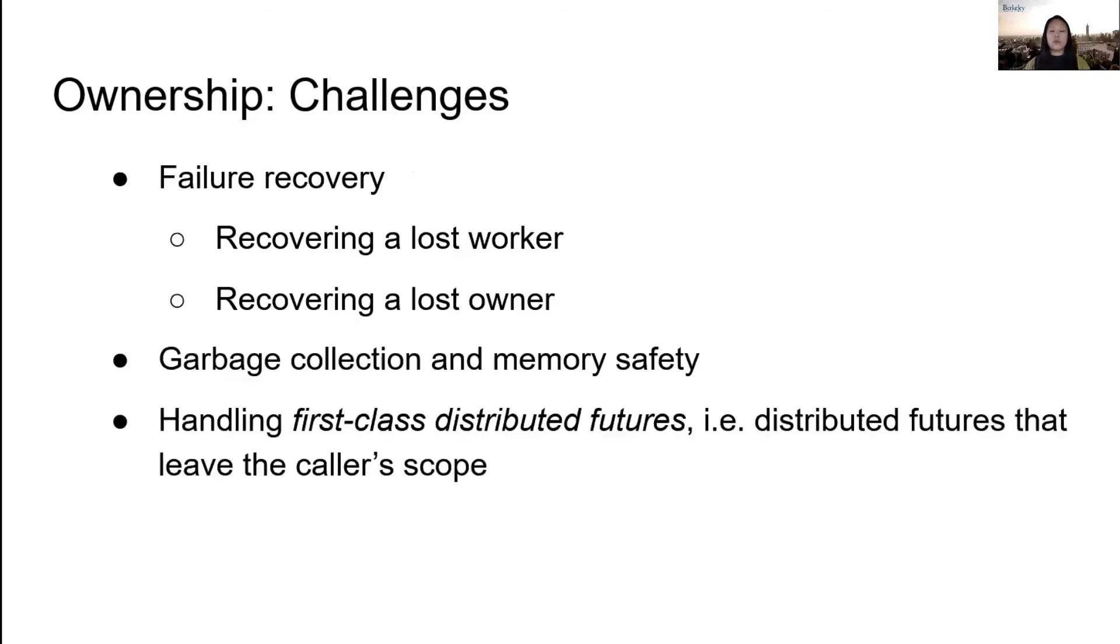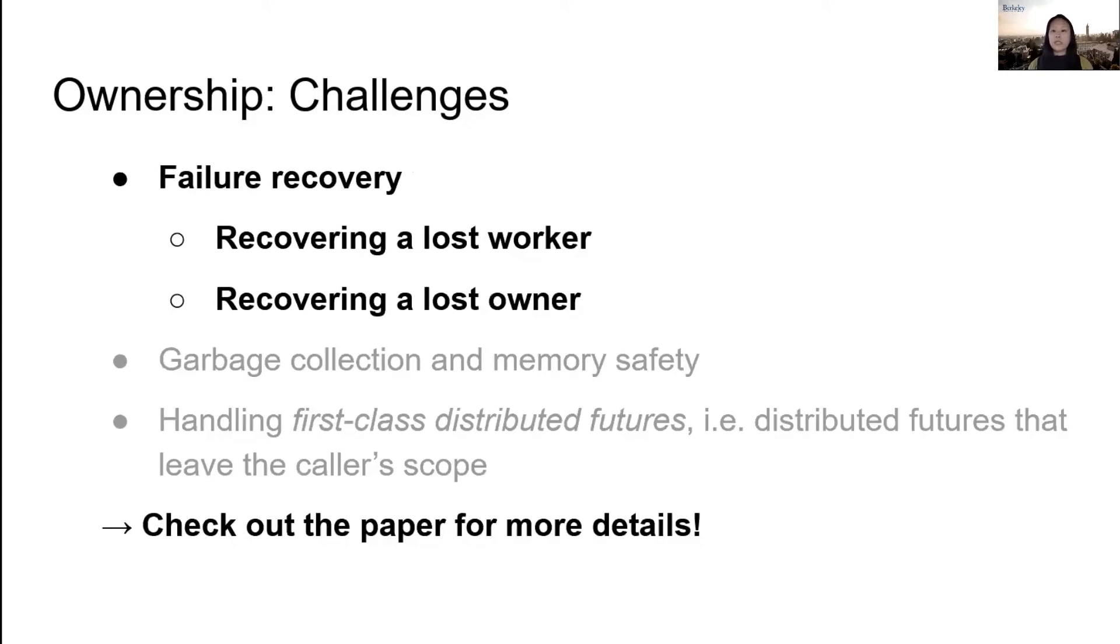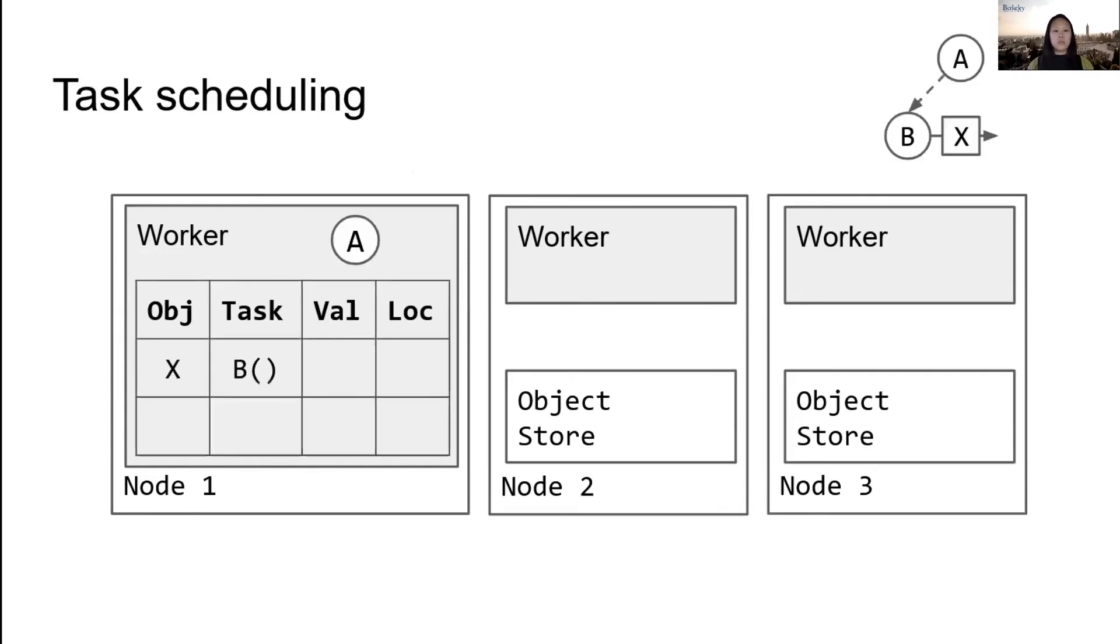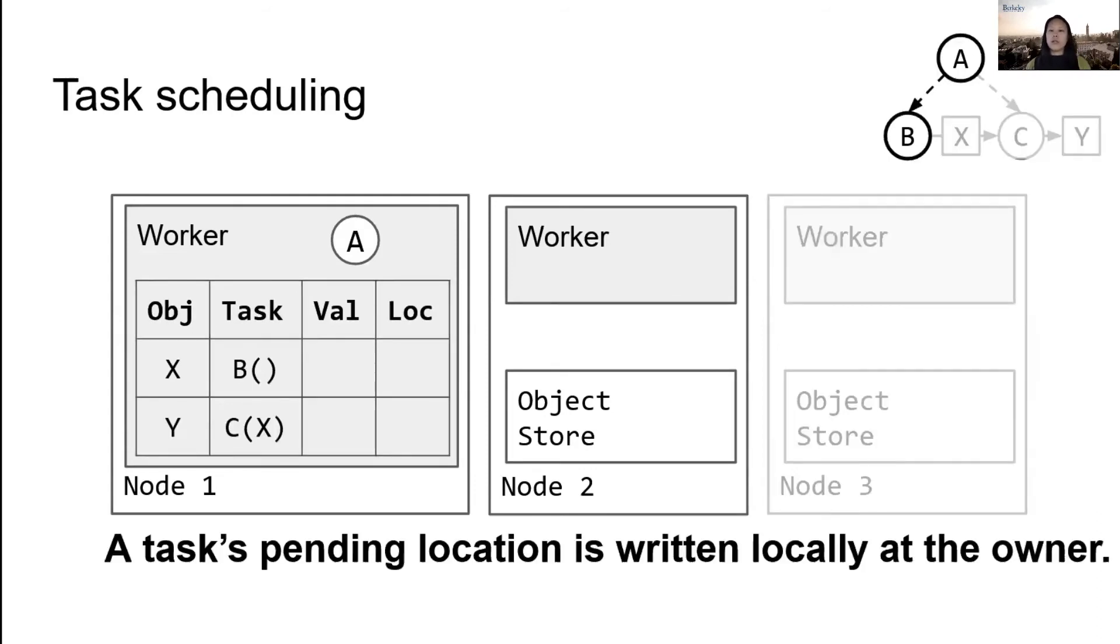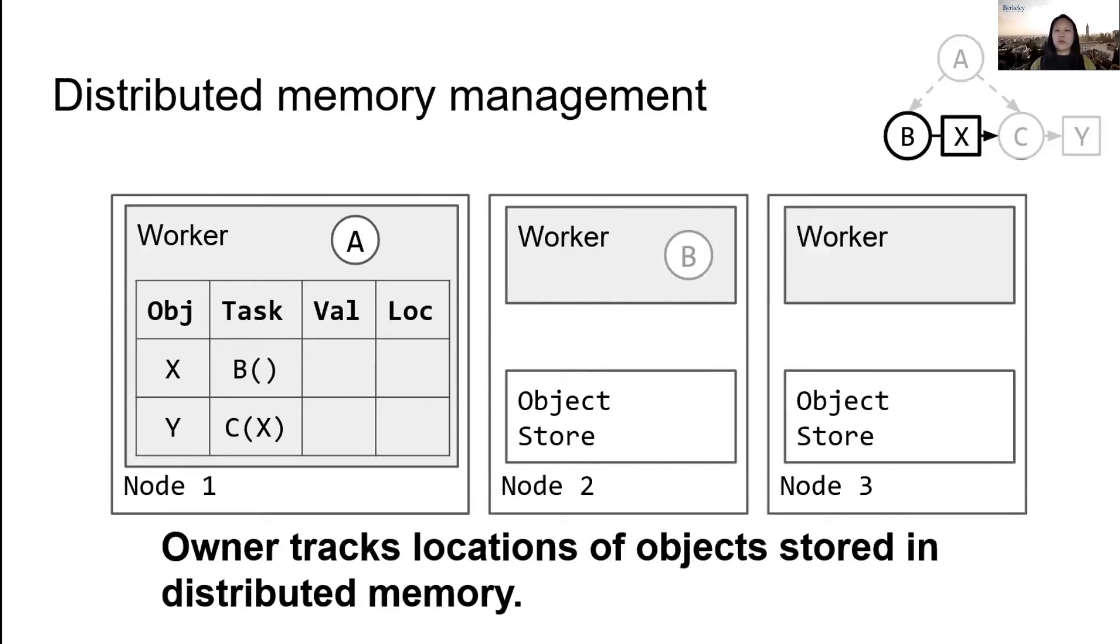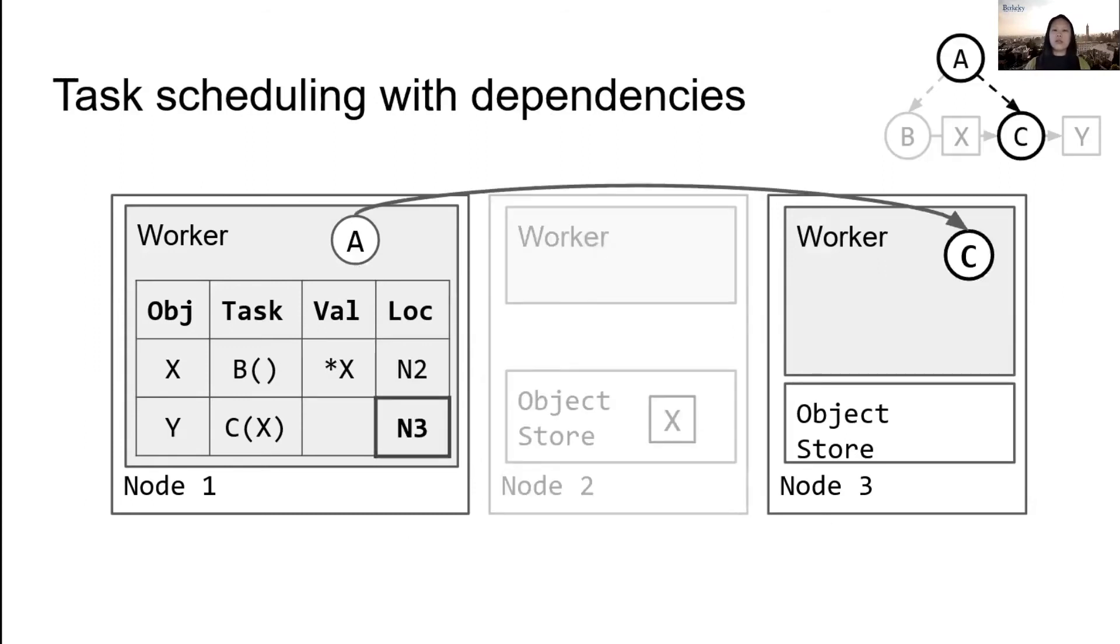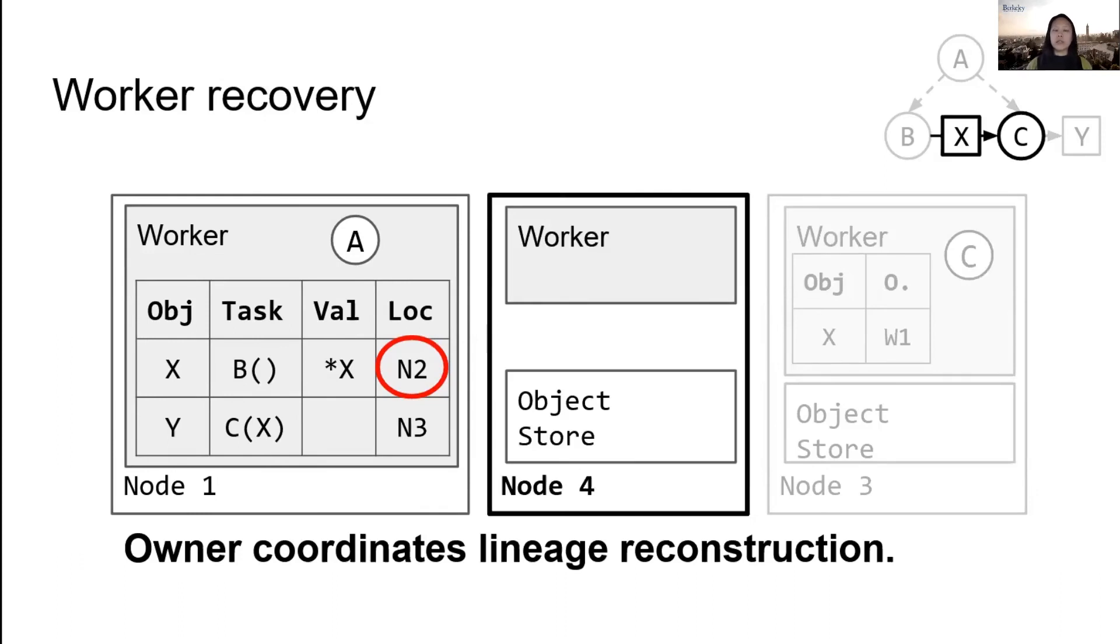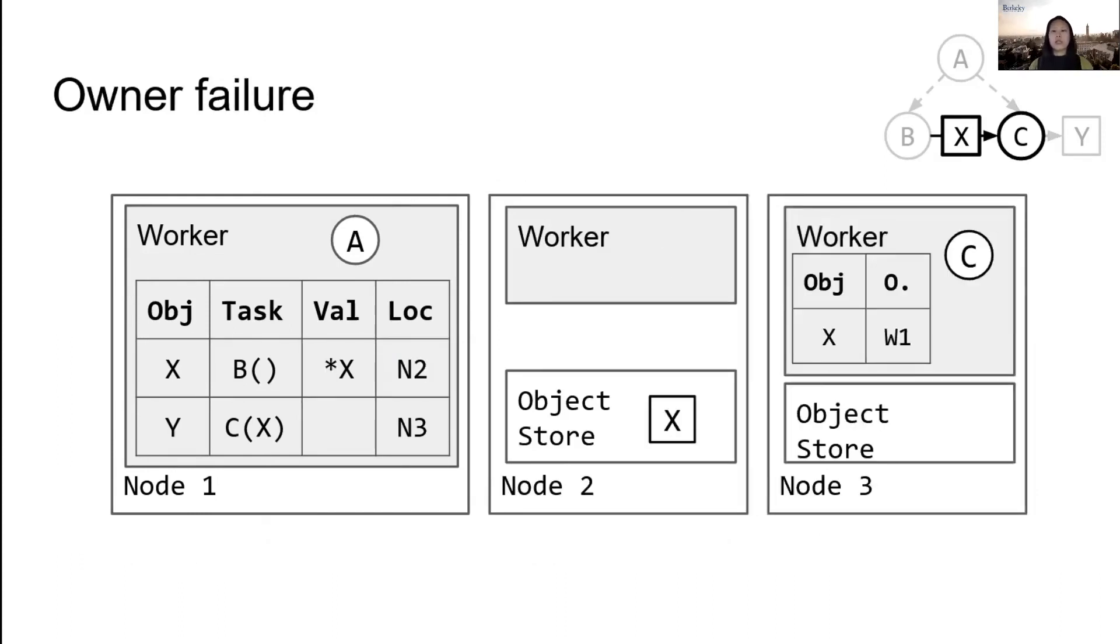In this talk I'll focus on failure recovery. Let's take a look at how this works. Here we have several worker nodes that each host an object store. The system metadata will be stored at the workers, and we'll use an example where we have task A that submits task B and then passes the return value to task C. First, to schedule B, the owner writes the location of the task before sending B to node 2 for execution. Once B finishes, the worker stores the return value in distributed memory and responds to X's owner. Next we schedule C onto worker 3, and since C has a reference to B's return value, it also receives the address of X's owner. Now let's say that there's a failure while worker 3 is trying to dereference X. We'll leave it to X's owner to detect the failure and then to recover the object by re-executing the object's lineage.